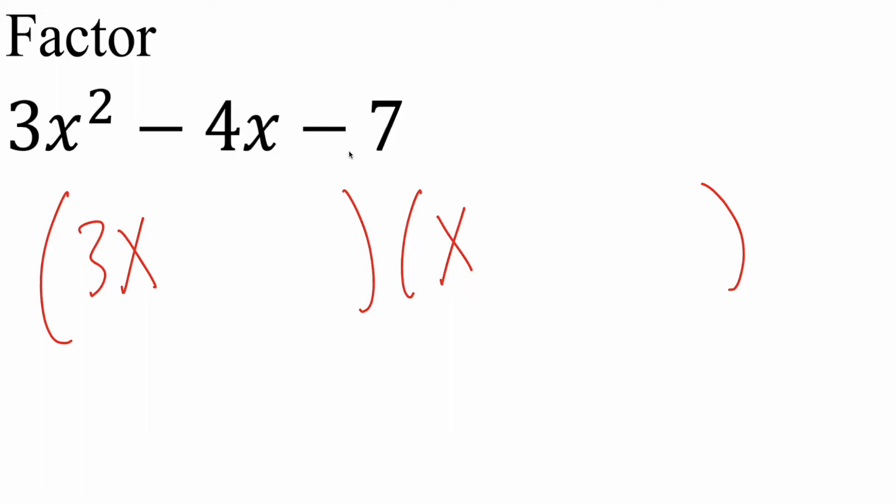Now we think how can we get negative 7, and there's two combinations, 1 times negative 7, and 7 times negative 1. Now for the trial and error approach, you could put a 1 here, you could put a negative 1 here, then you could put a 7 here, or a negative 7. So again it's trial and error.